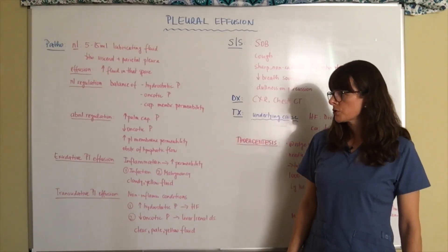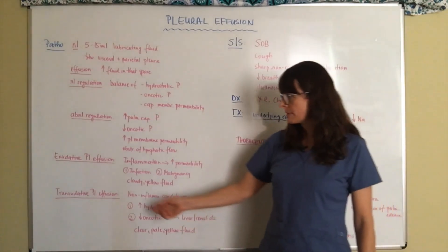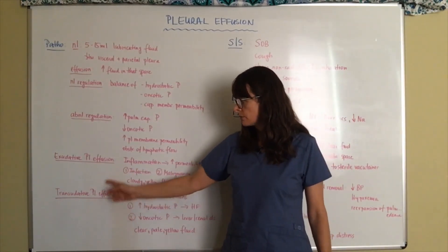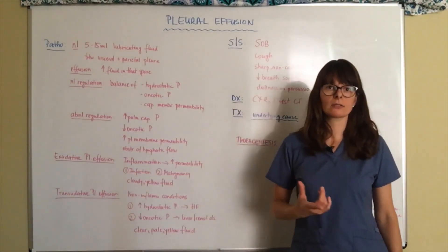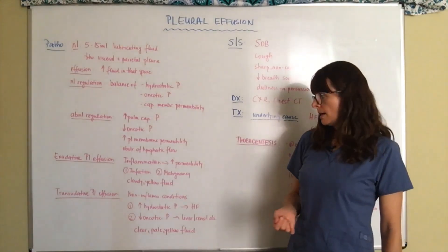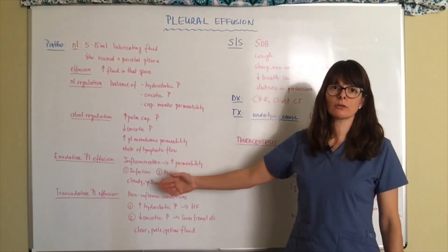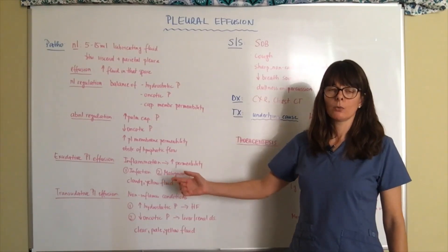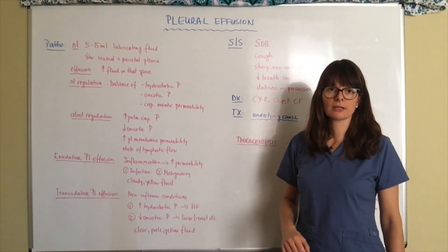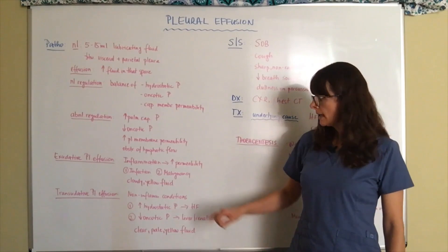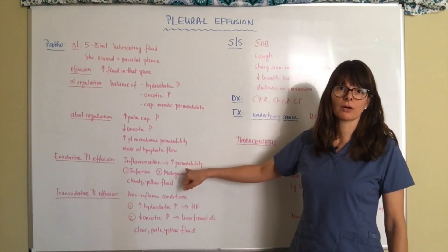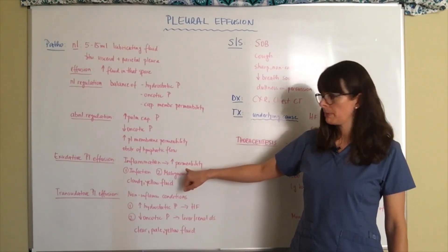And pleural effusions, there are two different types. One of them is exudative and the other one is transudative. So exudative, think about exudate as in pus, and that usually is because of inflammation. Some sort of inflammation is happening, which makes all the inflammatory cells attracted to that site and increases the pleural cavity permeability.